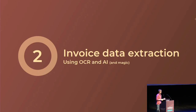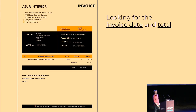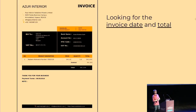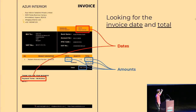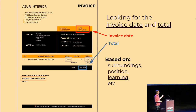Then once OCR is done, the AI we put in place — our server — is able to analyze the information and recognize where the relevant data is in the scanned PDF. Let's take an example: say you receive a vendor bill from Azure Interior. We're going to focus on two pieces of information — the invoice date and the total amount. We submit this to our system. OCR works its magic, translating the image into text that Odoo can read. Then it submits to our server, which identifies the dates and amounts. It has to figure out which date is the correct invoice date and which amount is the total, and it finds those based on different criteria.